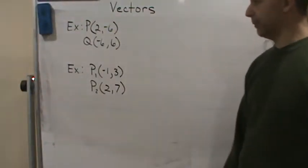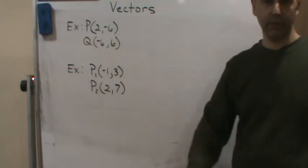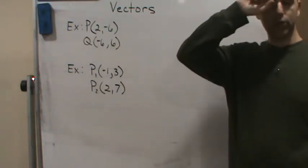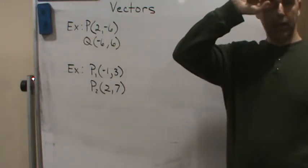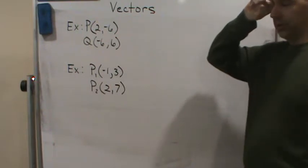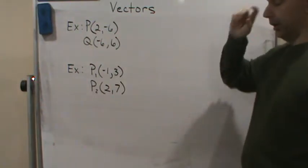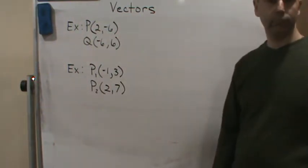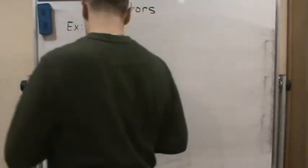Okay, so I'm going to do a couple of examples. In both of these examples, we're given an initial point and a terminal point of a vector, and we want to write the vector in terms of i and j. So let's do that.